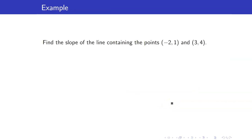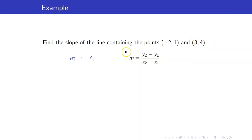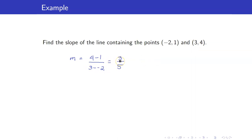Let us find the slope of the line containing the points negative 2, 1 and 3, 4. Using our formula, it's given by the difference in y-coordinates. Suppose I start with the point 3, 4. So from the y-coordinate, it's 4 minus 1, all over the difference of the x-coordinates, starting at the same point: 3 minus negative 2. This is equal to 3 fifths.